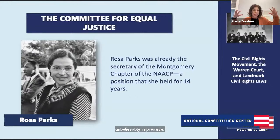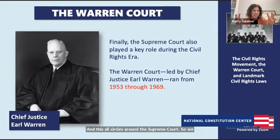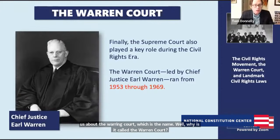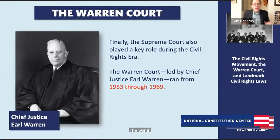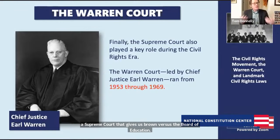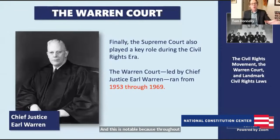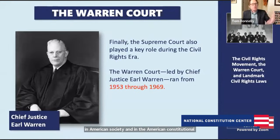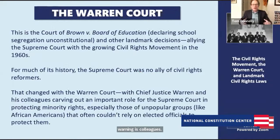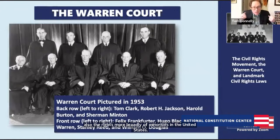All this work at the grassroots and national level circles around the Supreme Court. Tell us about the Warren Court. The Supreme Court plays a key role during this period. The Warren Court is named after Chief Justice Earl Warren. It ran from 1953 to 1964 and gives us Brown versus the Board of Education. Importantly, it's a court that was really allied with the goals of the civil rights movement — a notable change, because throughout a lot of the Supreme Court's history, it was no friend of civil rights reformers. Chief Justice Warren and his colleagues played a key role in pushing African American rights and ensuring those who were unpopular received their full protection under the Constitution.